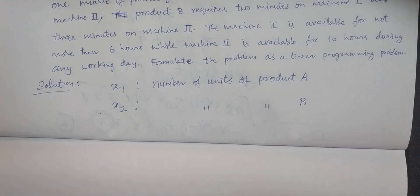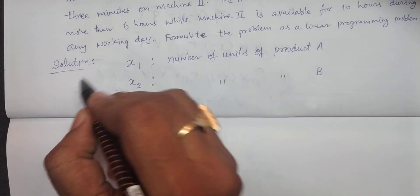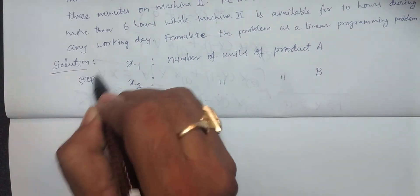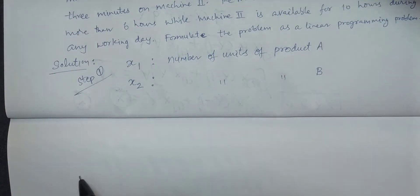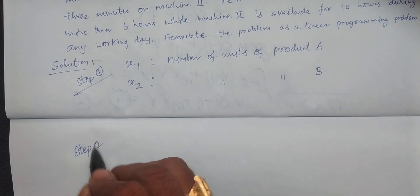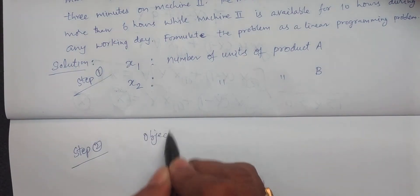The decision variables are very important and crucial — they decide all remaining points. This completes step one. Now, what is step two? Step two is the objective function.